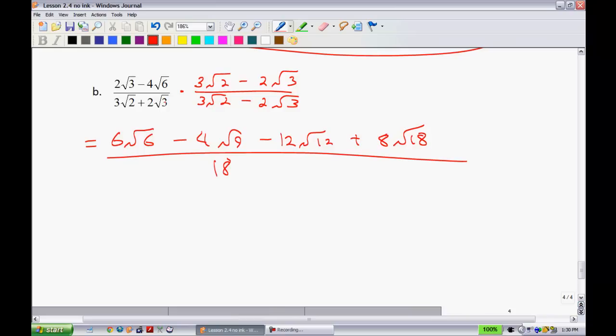Second term, 2 squared is 4, root 3 squared is just a 3, so this will be minus 12.